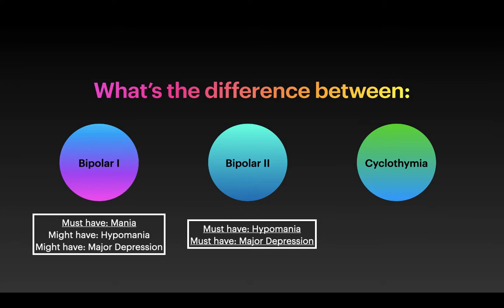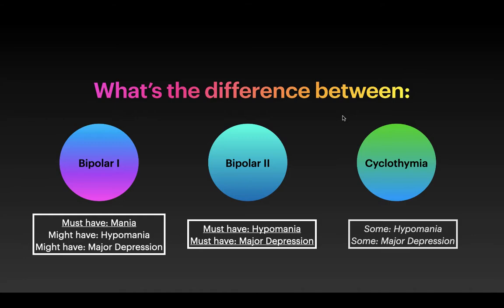For Bipolar 2, you must have hypomania — the reduced form of mania — and you must also have major depression. Cyclothymia is when you have some hypomania symptoms and some major depression symptoms, but not enough to fulfill all the criteria — it's a less intense version of bipolar. There are other categories as well, but these are the three most common ones.